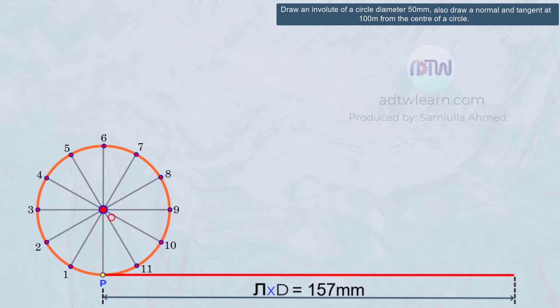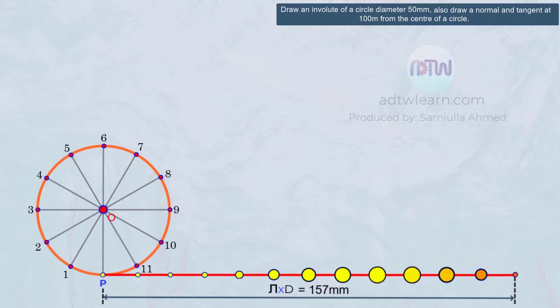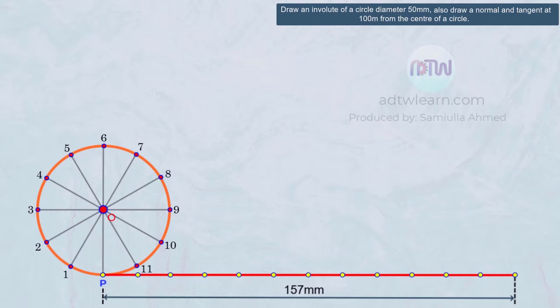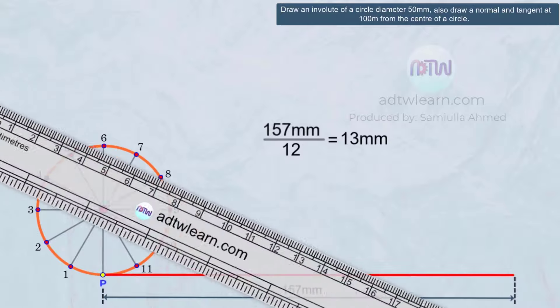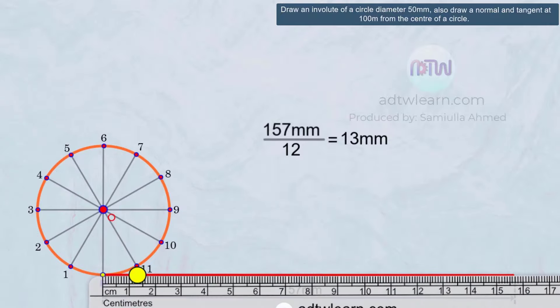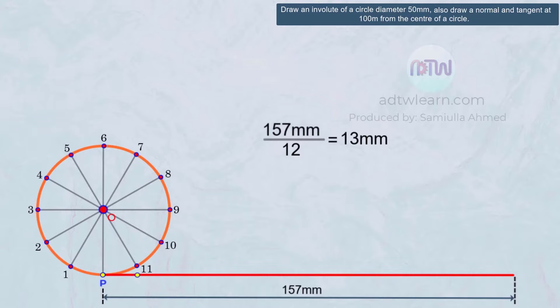After this, we need to divide this line into 12 equal divisions, and the distance between these points should be equal to the arc length between points on the circumference. To do so, divide this 157 millimeters by 12, which will be 13 millimeters. Therefore, mark 13 millimeters on this line. Next, take a compass, take this length, and cut arcs of equal lengths.